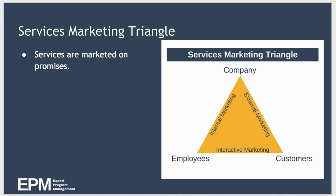The lines between the points show the different types of marketing that must occur. We have external marketing, which occurs between the company and its customers; internal marketing, which occurs between the company and its employees; and finally interactive marketing, which occurs between the employees and the customers.